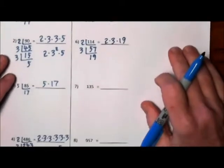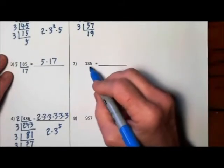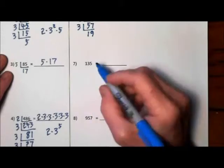We have two more in this sheet. 135. Will 2 go into that? Nope. How about a 3? 4 and 5 is 9, so 3 will work.